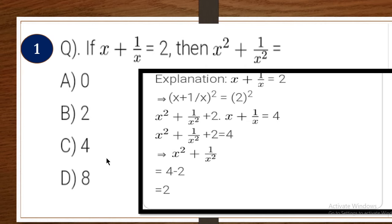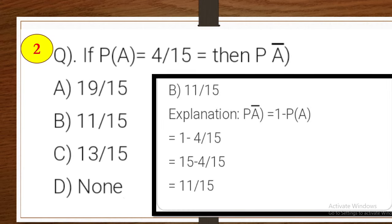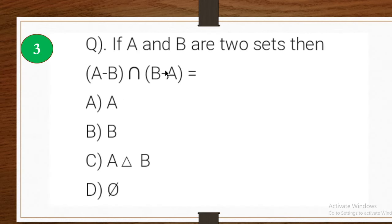Second one: if P(A) is equal to 4 by 15, then P(A̅) is — option A, B, C, or D: none. B is the correct answer. Explanation: P(A̅) = 1 − P(A) = 1 − 4/15 = 11/15.